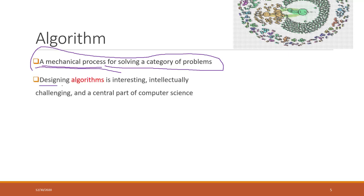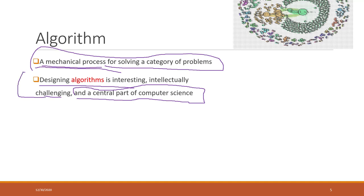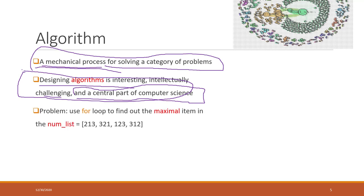Defining algorithms is very interesting, challenging, and is a central part of computer science. We are not going to be programmers since we are not majoring in computer science, but this is a really cool part of learning programming. Let's try a very simple example.